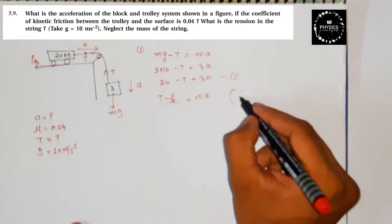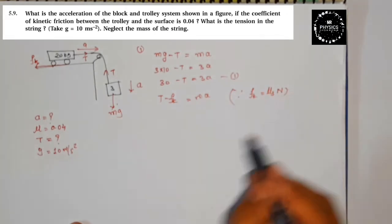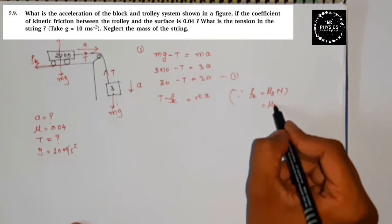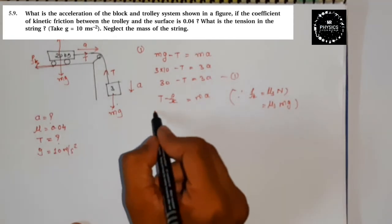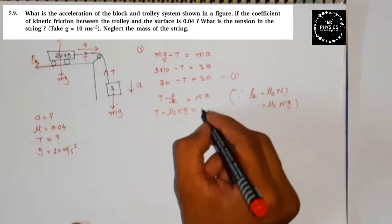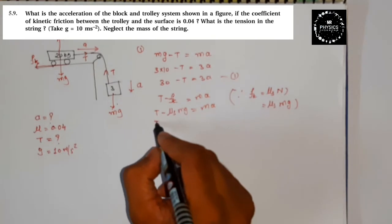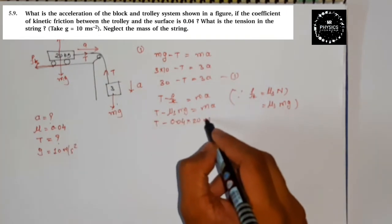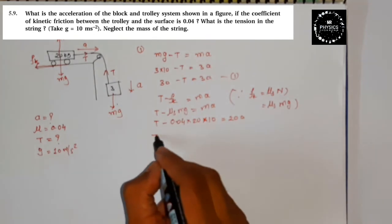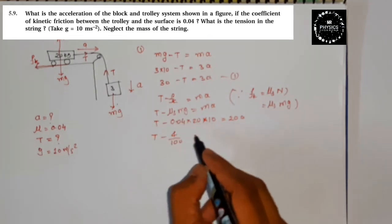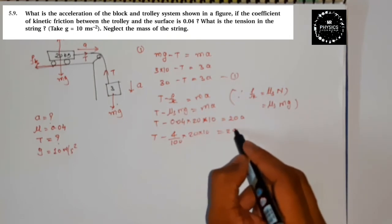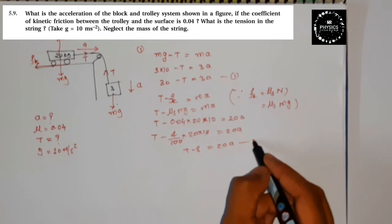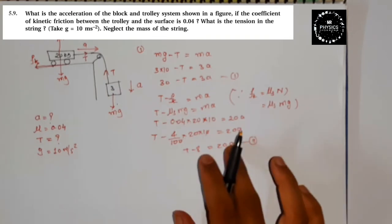fk kya hoga? fk mu s into N. N means what? Here mg perpendicular. N then is equal to mu s mg. So T minus mu s mg is equal to ma. T minus 0.04 into 20 into 10 is equal to 20a. This is the equation number 2.